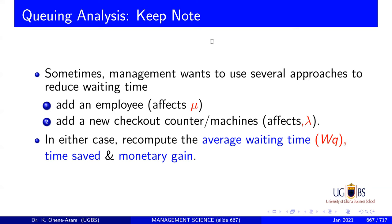So now we've been able to understand dealing with one server. All of this we've been dealing with one server. But in life, life is not a straight line. Sometimes management wants to use a lot of approaches to reduce waiting time. Sometimes the waiting time is too much — you are waiting 16 minutes to be served. That's too much. So management would want to use methodologies to deal with the situation. One way is by adding an employee.